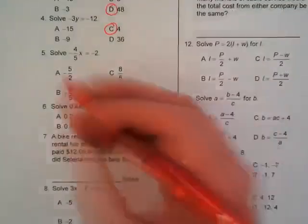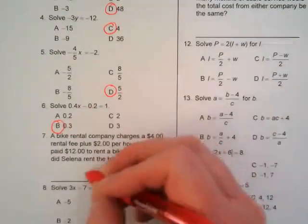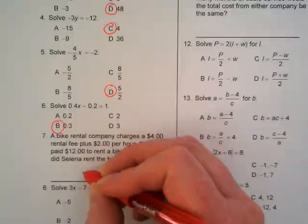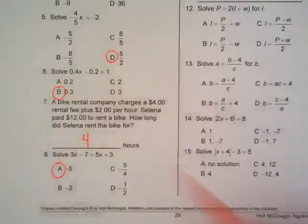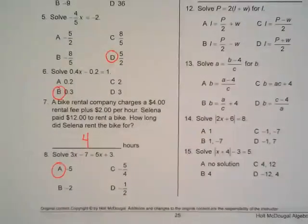And again, if people missed this by choosing A, they forgot the negative times negative rule right? Number six is B, seven is four, eight is A.